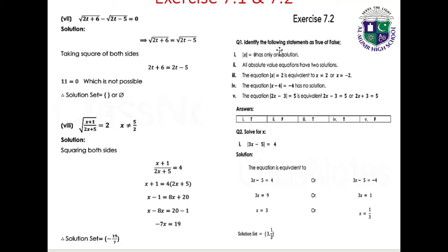Exercise 7.2: Identify the following statements as true or false. Statement 1: x equals 0 has only one solution — True. Statement 2: All absolute value equations have two solutions — False. The equation |x| equals 2 is equivalent to x equals 2 or x equals minus 2 — True. The equation |x minus 4| equivalent to |x minus 3| equals 2x plus 3 equals 4 — True.